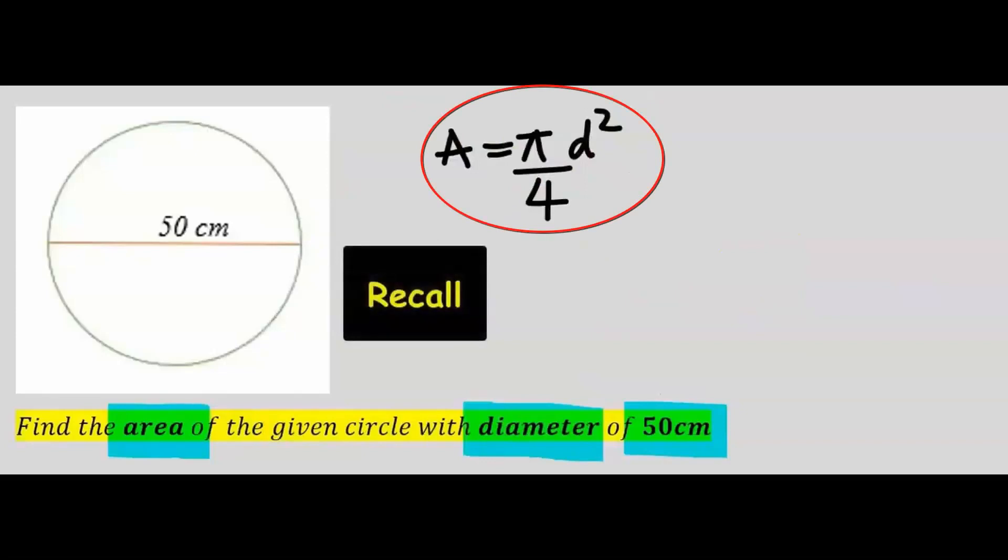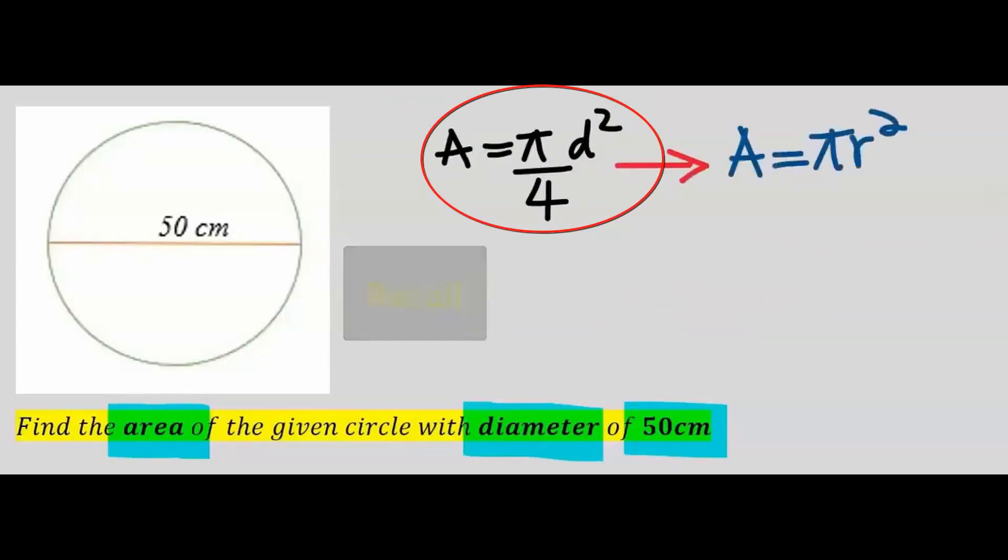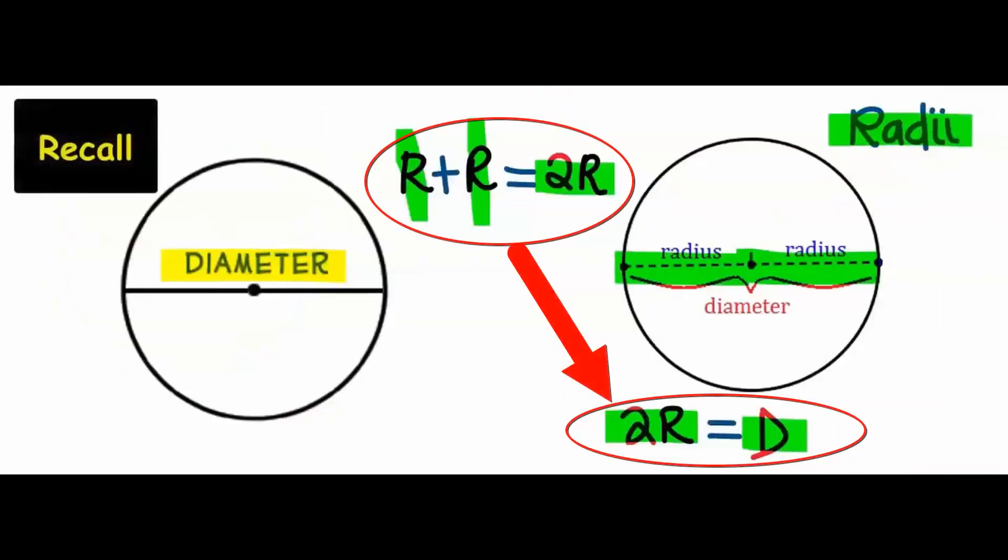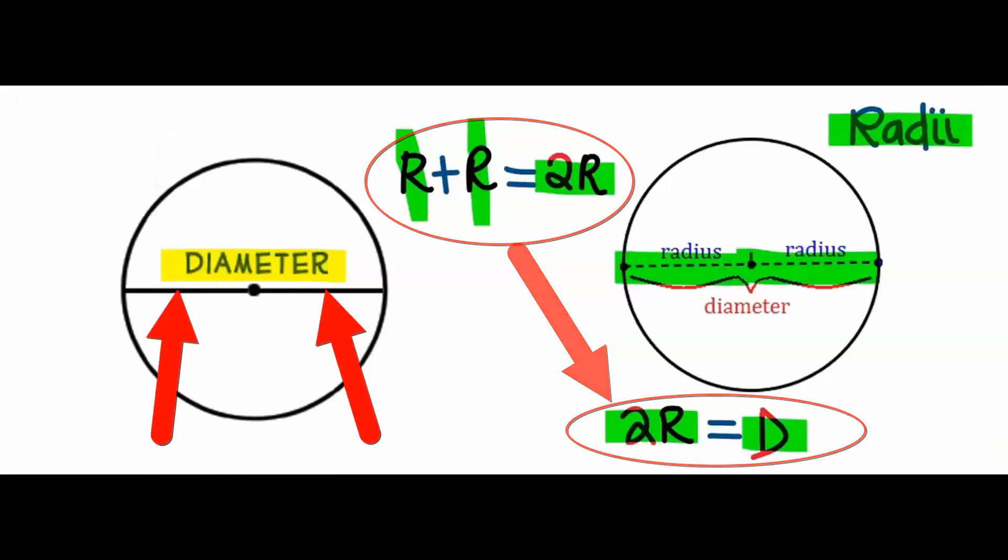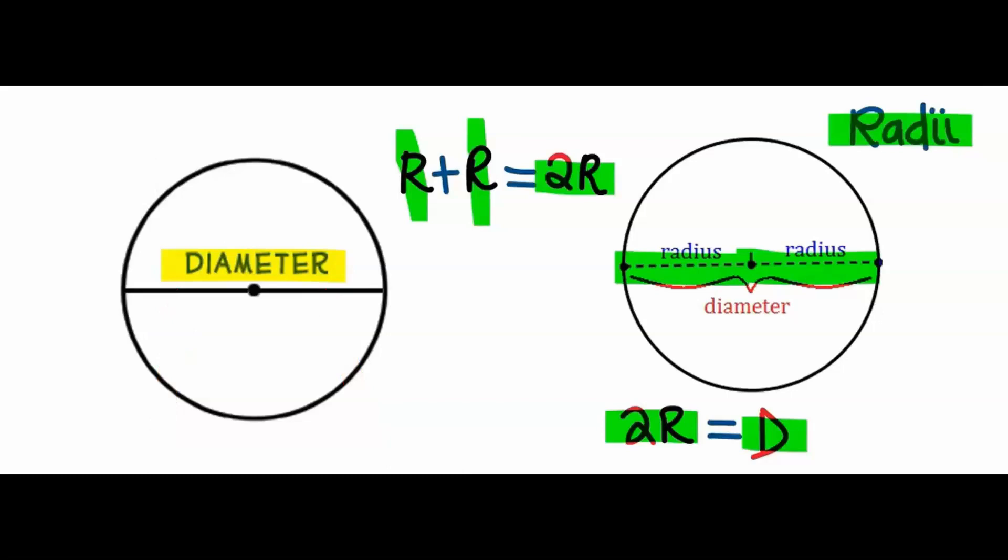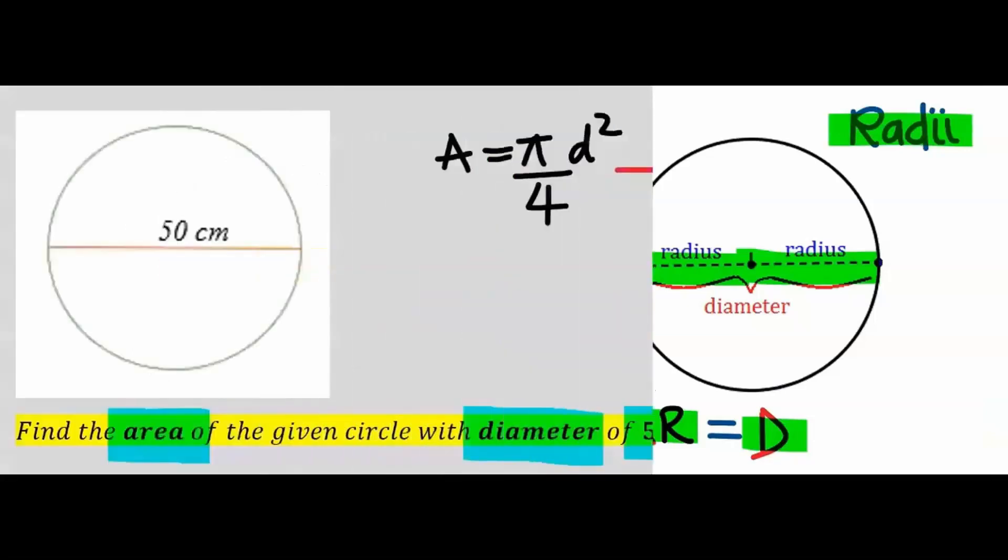This was obtained from πr². Remember, for any given circle, the diameter is the addition of the two radii. Hence, r will become diameter divided by 2, and wherever we see r, we are going to replace it with d over 2.